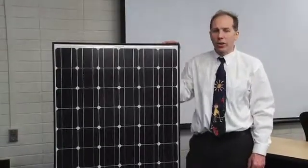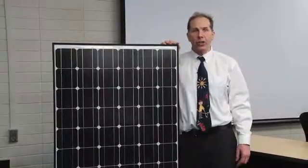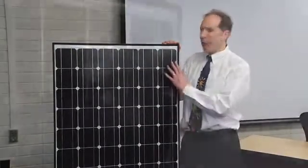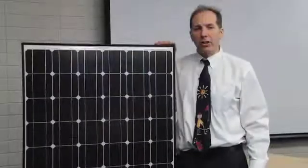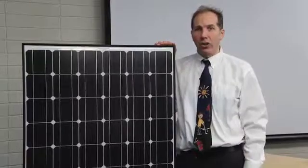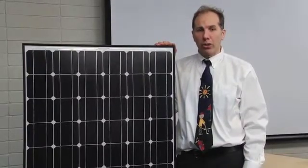And it's using the Sanyo HIT technology, which means that on top of the crystalline silicon wafer, they've deposited a thin layer of amorphous silicon. That thin layer gives the solar cell a higher voltage and also reduces its temperature coefficient.